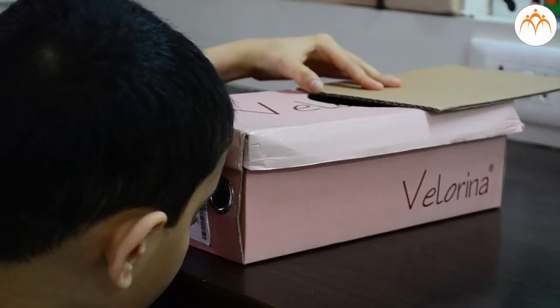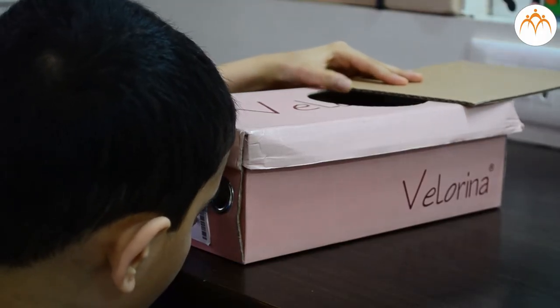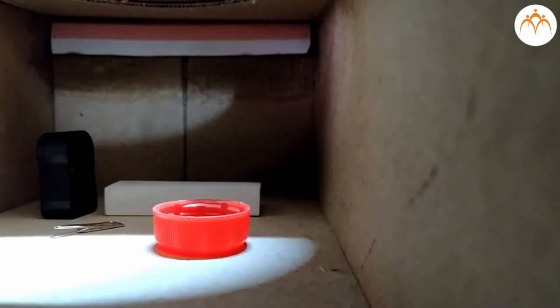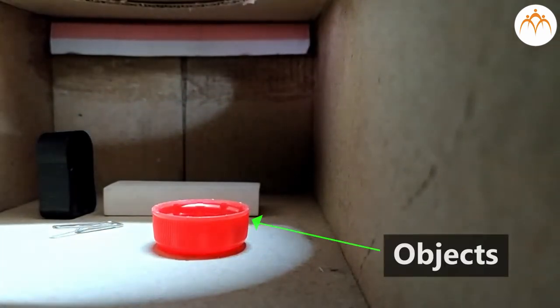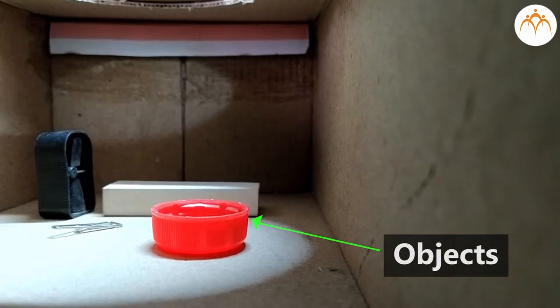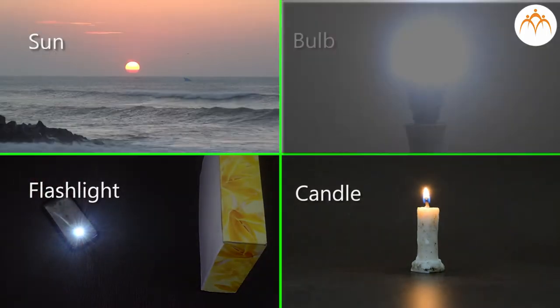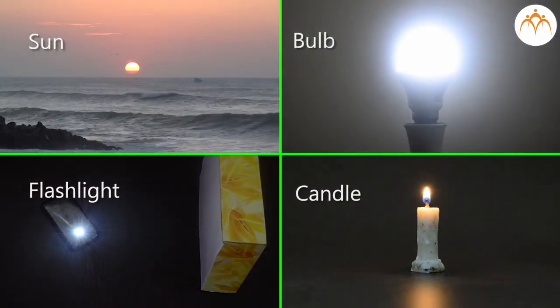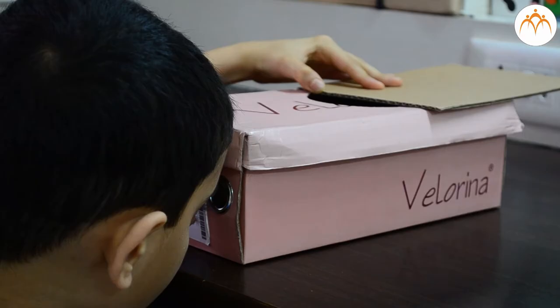We see things when light reflects off them into our eyes. We can only see things when light shines onto an object — this might be light from the sun, from a bulb, a flashlight, or a candle. We cannot see objects in a dark room because there is no light to reflect into our eyes.